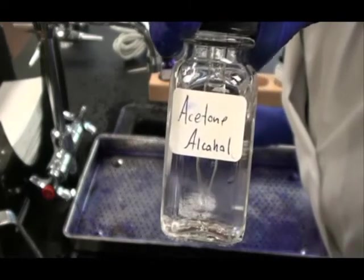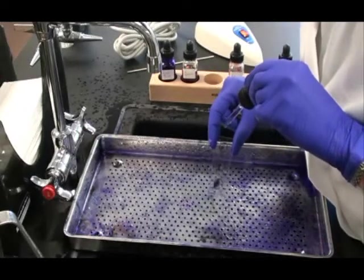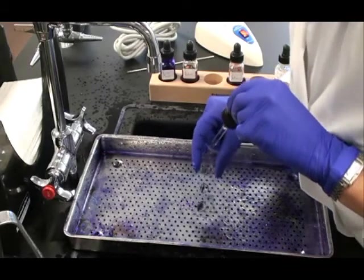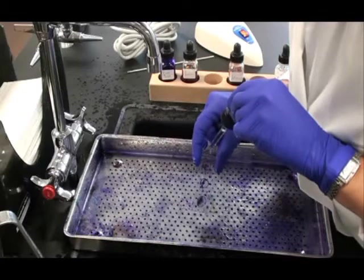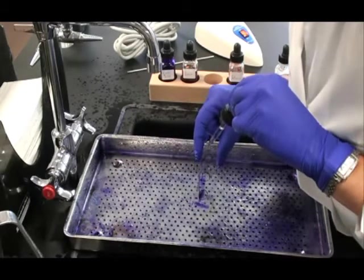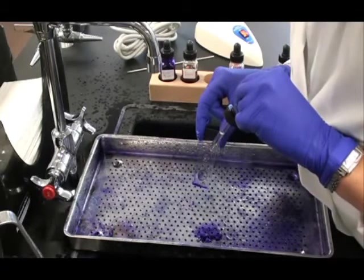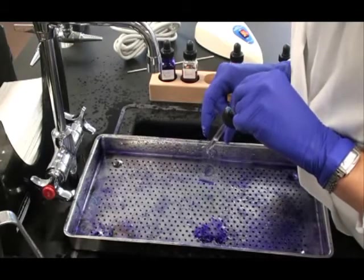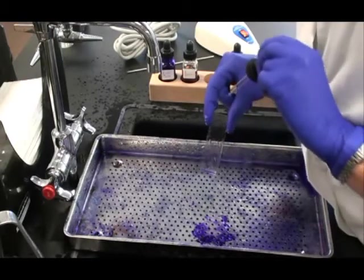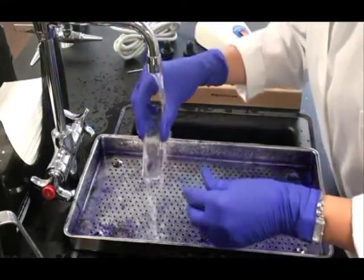Here's the decolorizer. I like to hold my slide at an angle vertically and drip that decolorizer down the slide. That way I can see the color being removed from the Gram-negative bacterial smear. And then I know things are working right. So I let that drip for 10 to 15 seconds and watch that color leave the Gram-negative control. Then I rinse.